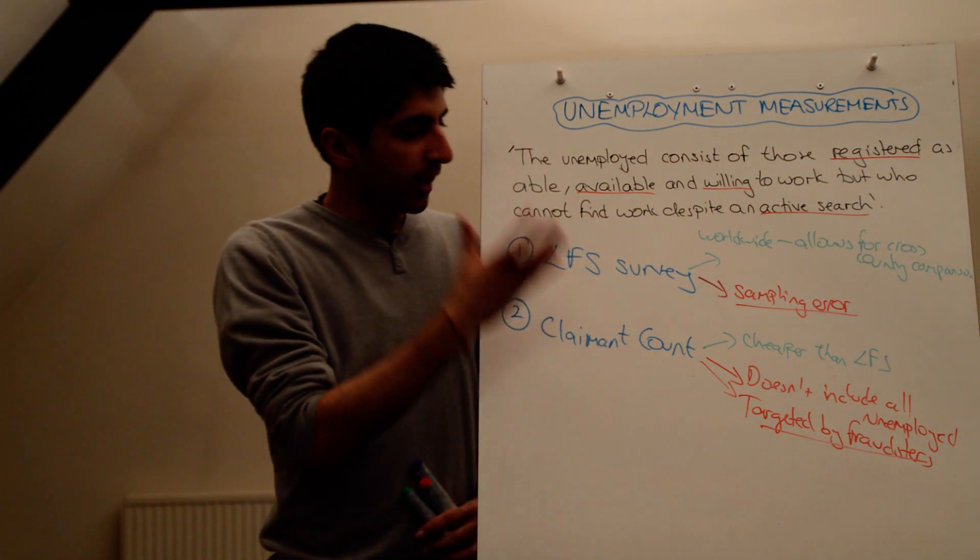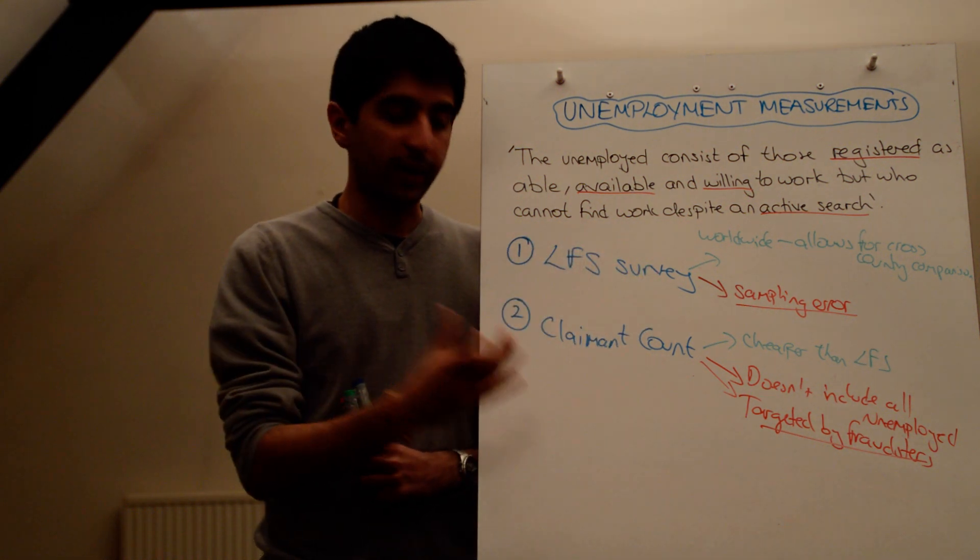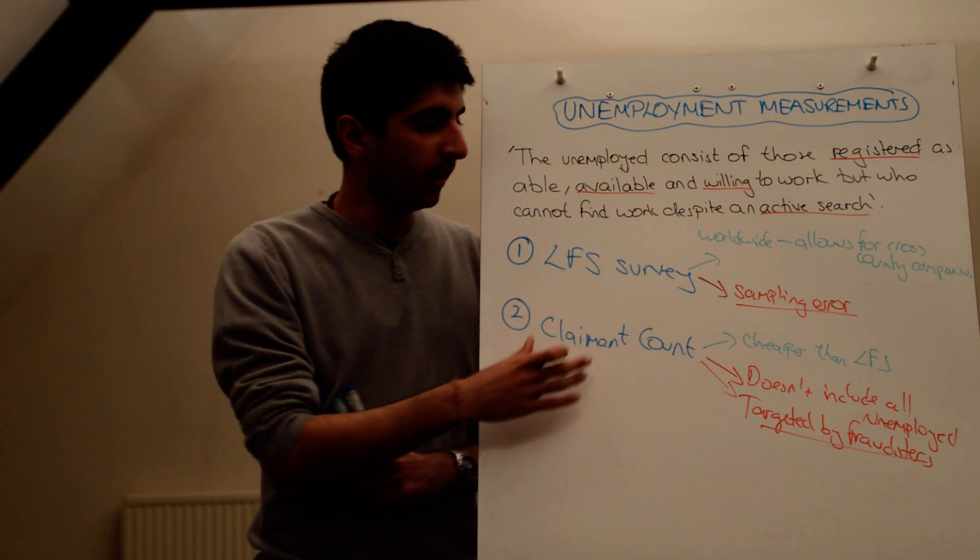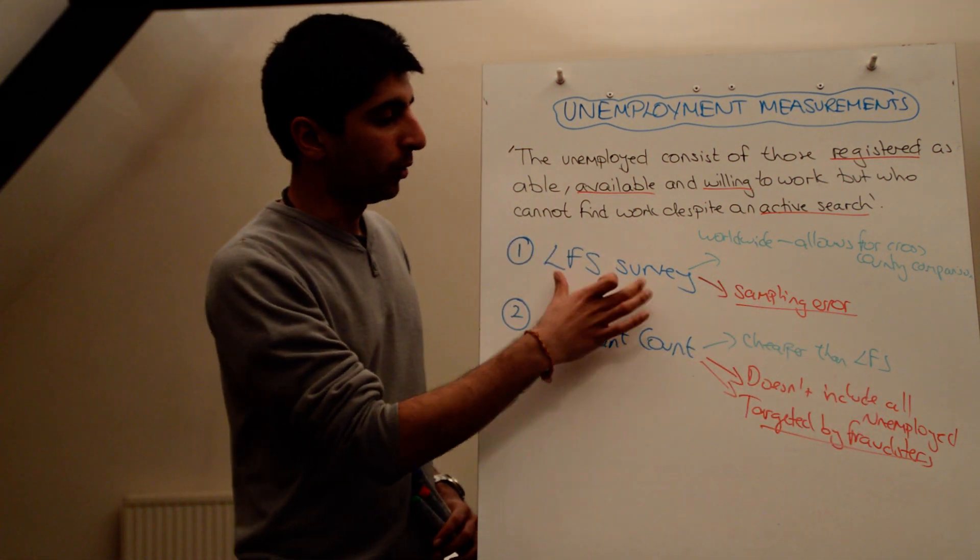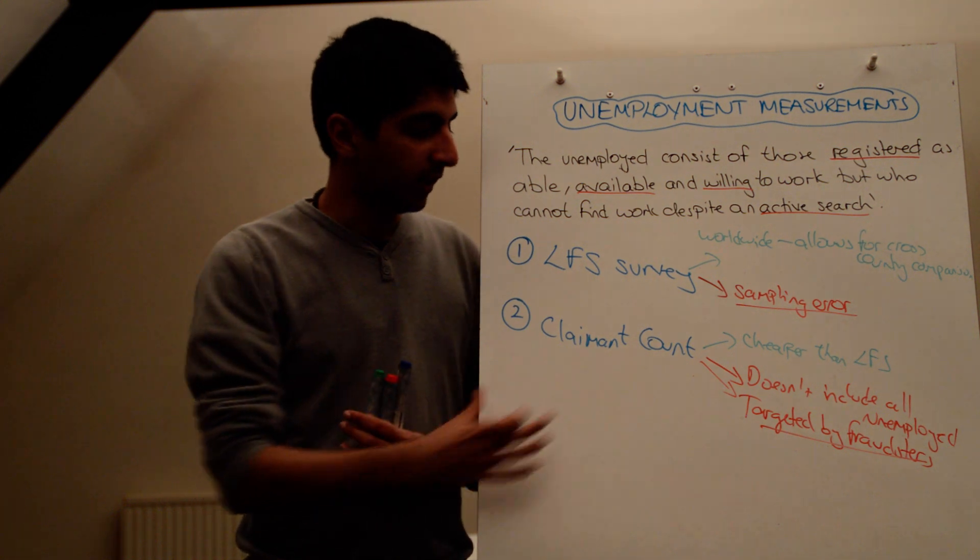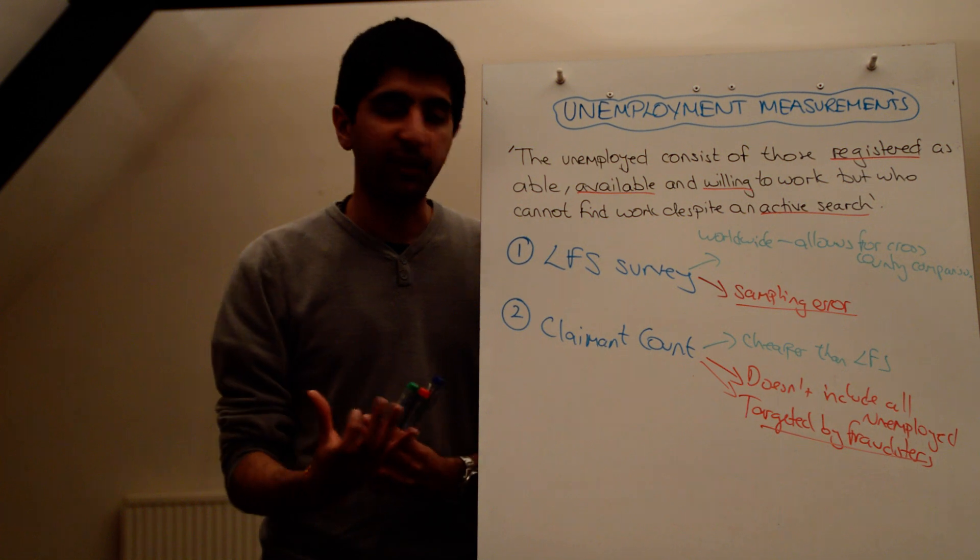Based on what you just said, it's obvious that the LFS figure of unemployment will generally always be higher than the claimant count figure. Because the claimant count doesn't include all the people that would be included in the LFS measure. There are more rules and regulations that people have to fit to actually be able to claim benefit.